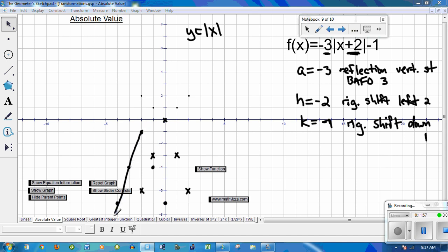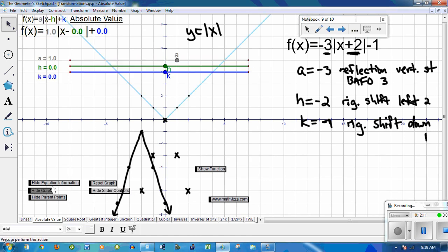So, it's a transformed graph from the parent function y equals absolute value of x. And let me just turn the slider controls on to see if that's what we get when we perform the translation. First thing I'll do is make a negative 3. And that gives me my vertical stretch and reflection. And then the value of h was negative 2, because it was the inverse of what you see, because it's inside the absolute value bars. And then k was negative 1. And those graphs match up.